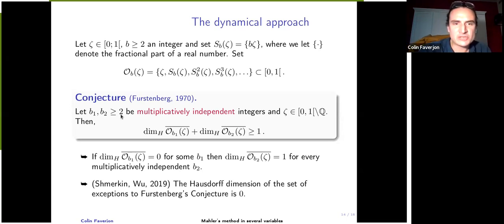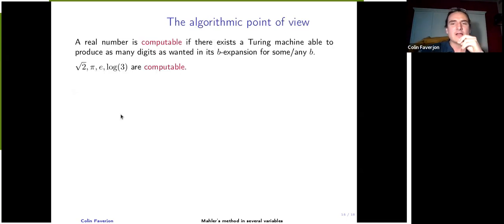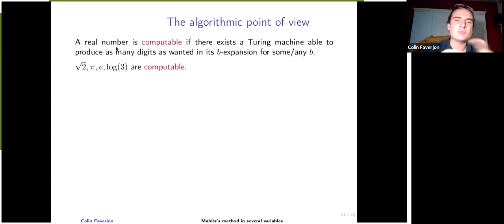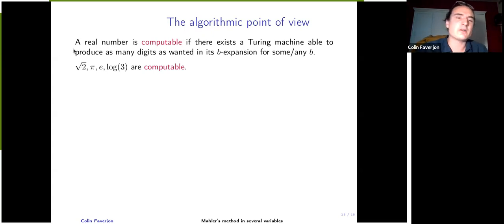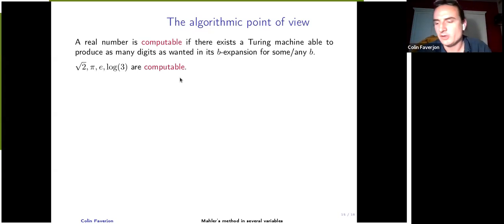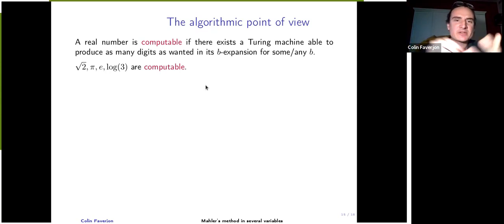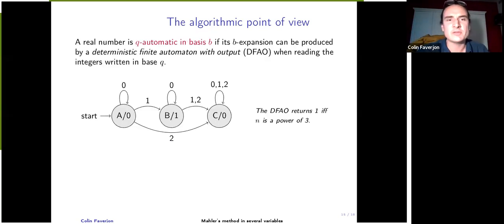To narrow the problem, we take an algorithmic point of view. A real number is computable if one can produce its B-expansion for some B with a Turing machine — and if this holds for one B, it holds for any B. Most useful constants like the square root of two, pi, and e are computable. We further restrict to automatic real numbers. A deterministic finite automaton with output (DFAO) is a Turing machine with a finite number of states — for example, one with three states. In our setting, it reads an integer written in base Q and changes states according to a rule depending only on its current state and the digit read.